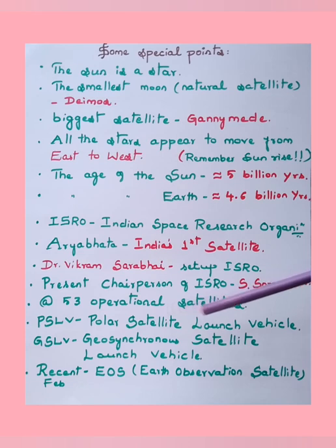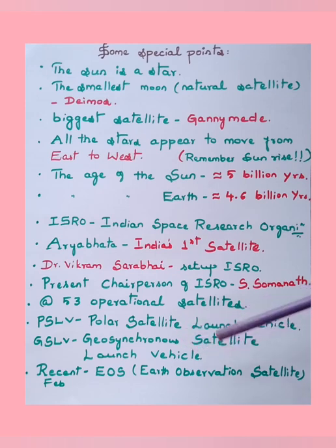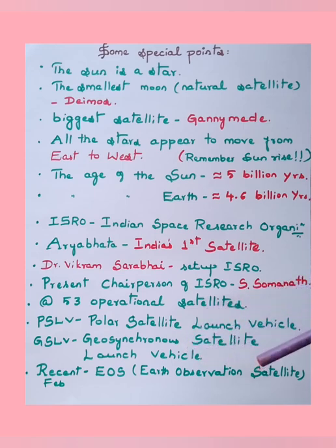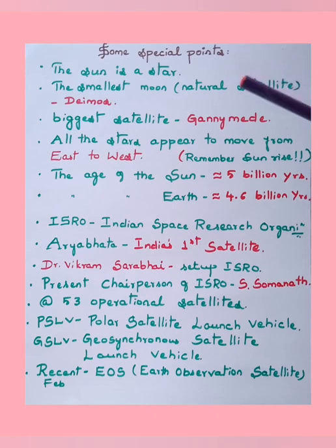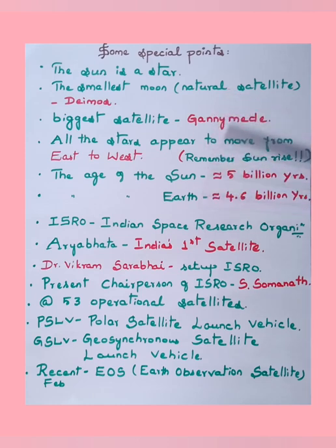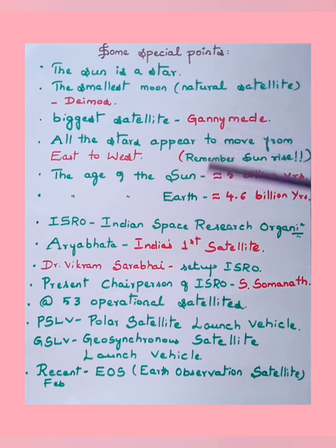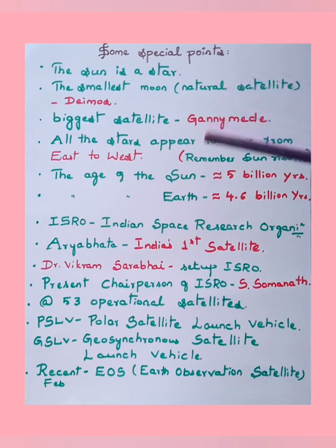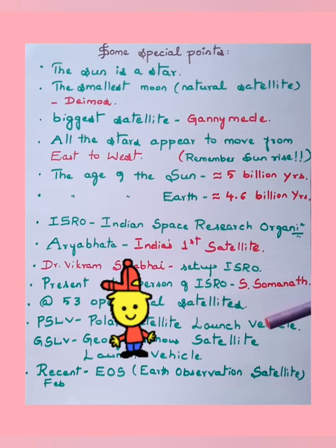At present there are about 53 operational satellites. PSLV stands for Polar Satellite Launch Vehicle. GSLV stands for Geosynchronous Satellite Launch Vehicle. Recently in February 2022, EOS — Earth Observation Satellite — was launched. I have tried to cover few important points related to the universe. Please check out our channel playlist for important videos related to your GPS Tier exam and TET exams. Thank you for watching.